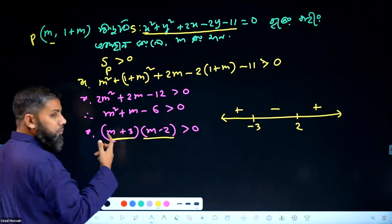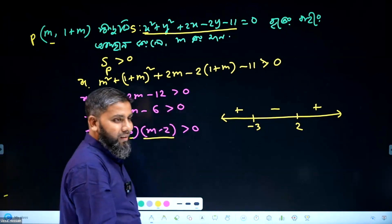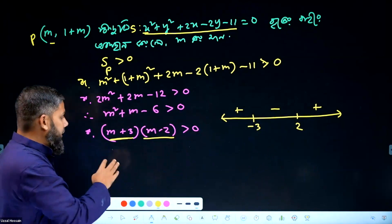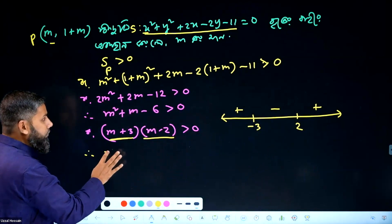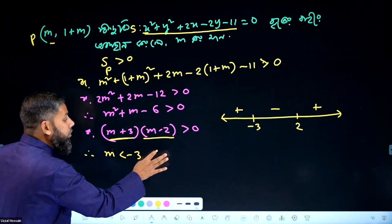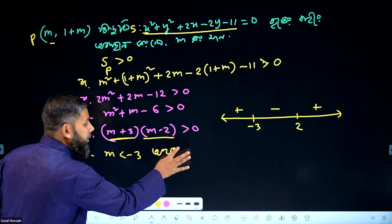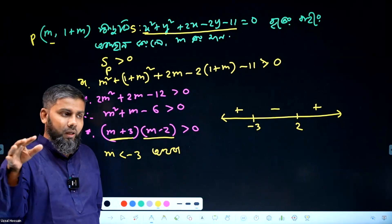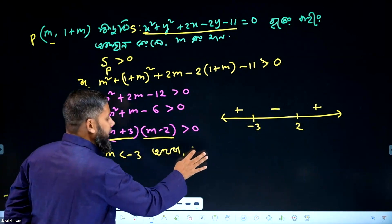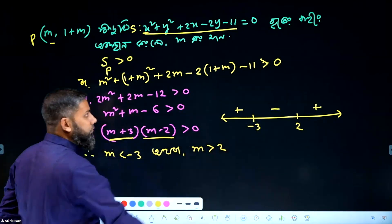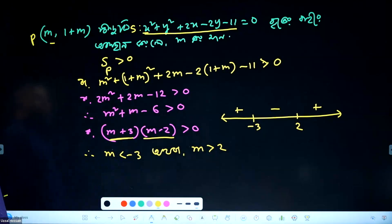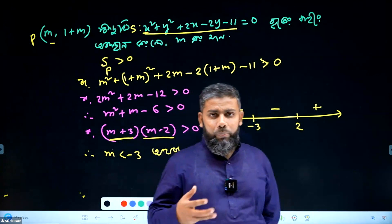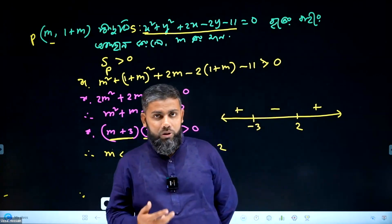So they are at the bottom: m less than minus 3. Or, if you write it as the first segment in one segment — m greater than 2. So the solution is m less than minus 3 or m greater than 2. Is it clear? Let's see the next step.